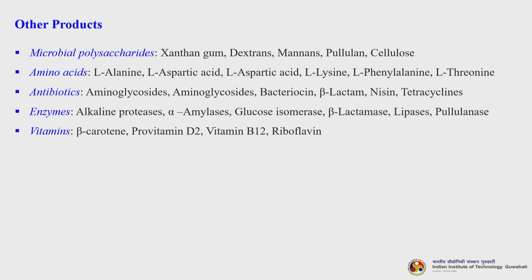Apart from the major products discussed, there are other products produced in smaller quantities that have high industrial and commercial value. Microbial polysaccharides include xanthan gum, dextrans, mannans, pullulan and cellulose. Amino acids include L-alanine, L-aspartic acid, L-lysine, L-phenylalanine and L-threonine. Antibiotics include aminoglycosides, bacitracin, beta-lactams, nisin and tetracyclines. Enzymes such as alkaline proteases and alpha amylases, and vitamins like beta-carotene, pro-vitamin D2, vitamin B12 and riboflavin.